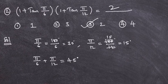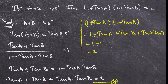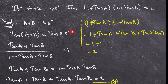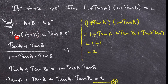Now we will see the proof and derivation of this result — why, if a plus b is 45 degrees, then (1 + tan a)(1 + tan b) = 2. First, I considered a plus b = 45 degrees, and then I applied tan on both sides.